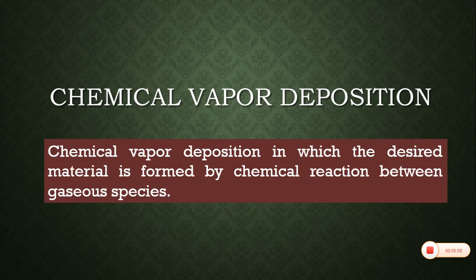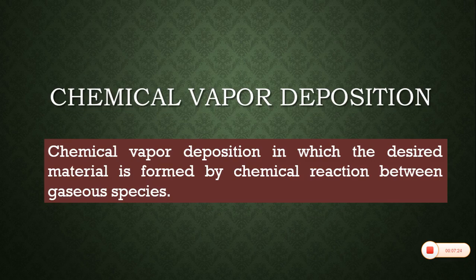It can be used to deposit all classes of materials including metals, ceramics, and semiconductors for a variety of applications. It is used for coating large areas and is useful in mass production. Thin films, thick films, or even monolithic bodies can be fabricated by using chemical vapor deposition method.